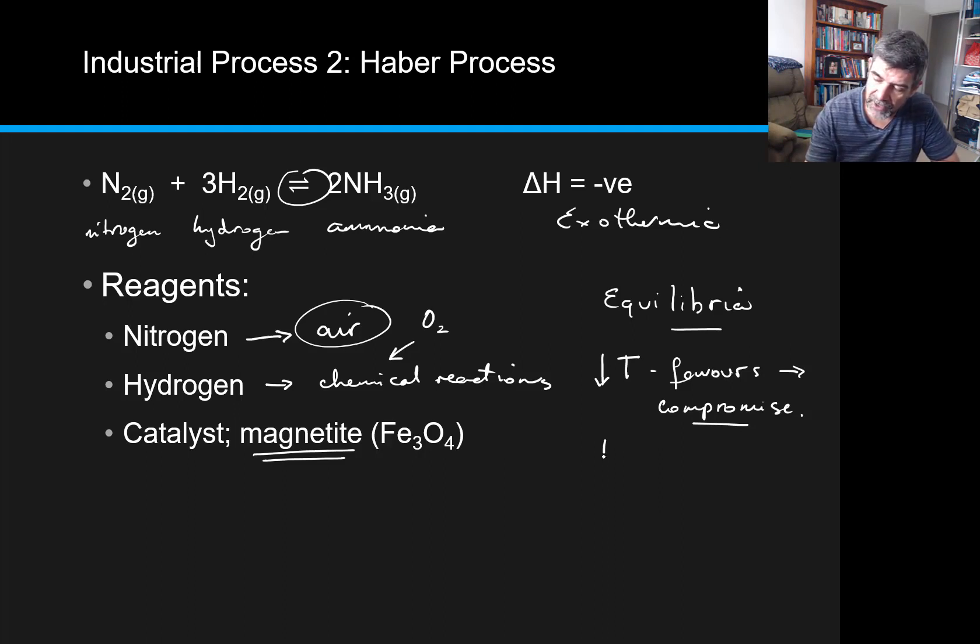The same is true with pressure. So what we have when we look at pressure is we have 1 plus 3 is 4 moles of gases on the reactant side and just the 2 on the product side. So therefore, an increase of pressure will also favor the forward reaction and increasing the yield. Now this is great. We can just increase the pressure and increase the amount of ammonia that we produce.